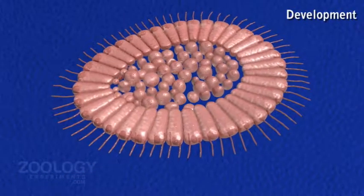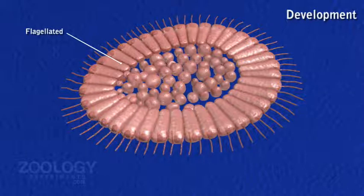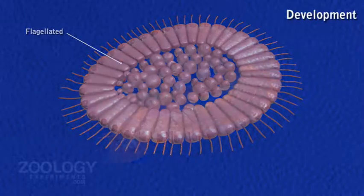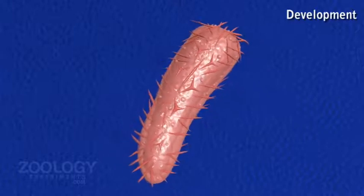The larva now reaches a stage corresponding to the planula larva of coelenterates. It is termed a stereogastula or parenchymyla, and consists of an external layer of flagellated cells and an inner mass of amoeboid cells. It has no mouth opening.